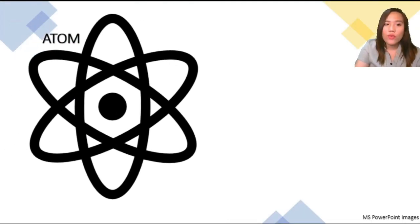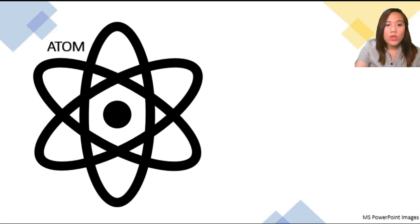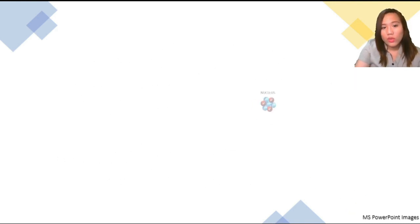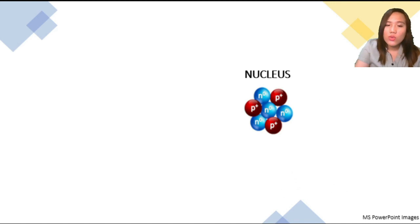I have here an example or illustration of an atom. The lines here represent the orbits where you can find the electrons, and the dense center of the atom is called the nucleus. This nucleus is composed of neutrons, or the neutral charge, and the protons, or the positive charge.